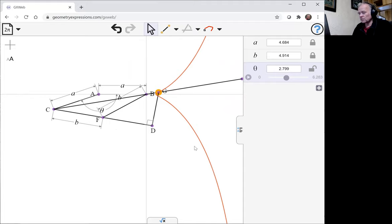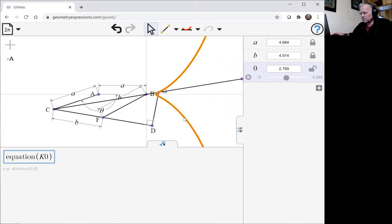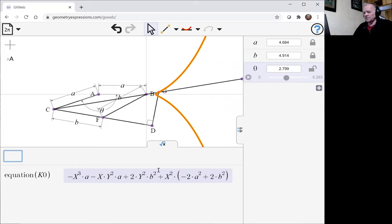Okay, so what is the equation of the curve? And we see a similar form of the curve. It's got an x cubed, an xy squared, an x squared, something in there, and a y squared.